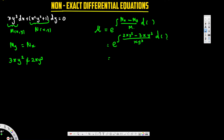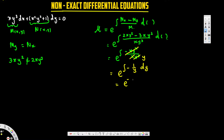Simplifying 2xy² − 3xy² gives −xy². So we have e^(∫ −xy²/(xy³)). The x and y² cancel, leaving −1/y. So this becomes e^(∫ −1/y dy). Moving the negative to the front, the integral of 1/y is ln(y), giving e^(−ln y). We don't need to add a constant for the integrating factor since it will cancel when multiplied through.